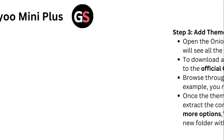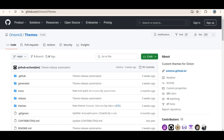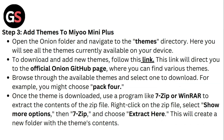Step 3: Add themes to your Miyoo Mini Plus. Open the Onion folder and navigate to the Themes directory. Here you'll see all themes currently available on your device. To download and add new themes, follow this link — it will direct you to the official Onion GitHub page where you can find various themes.